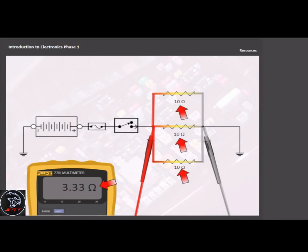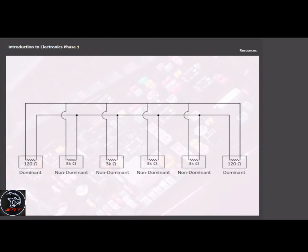We sometimes call the smallest resistor in a parallel circuit the dominant resistor. This is because in a parallel circuit the smallest resistor has a greater effect on total circuit resistance than a large resistor does.